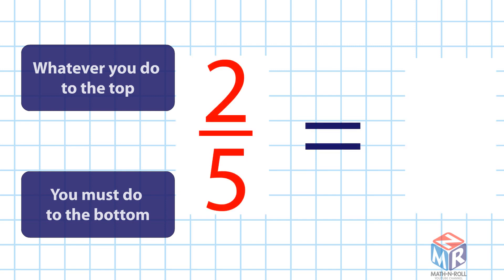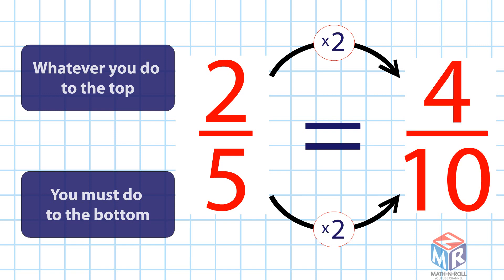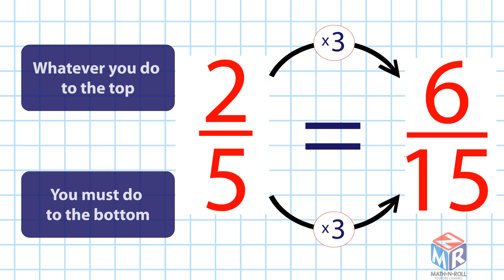Let's find the equivalent fraction of 2 fifths by multiplying by 2. We get 4 tenths. Let's multiply it by 3. Now we have 6 fifteenths.